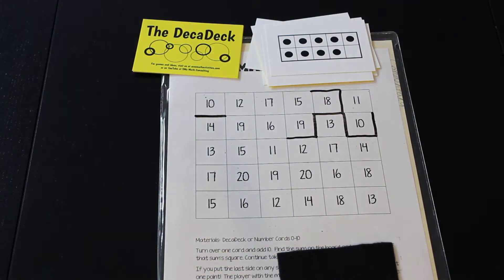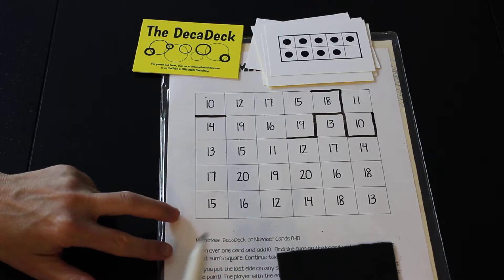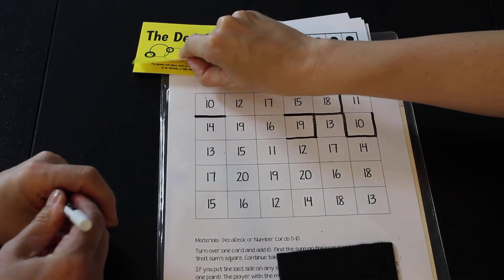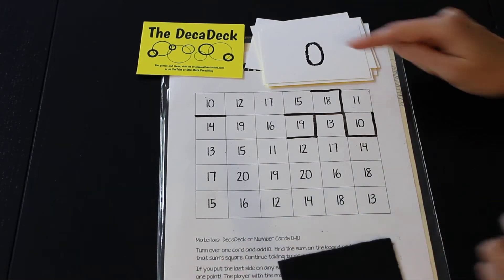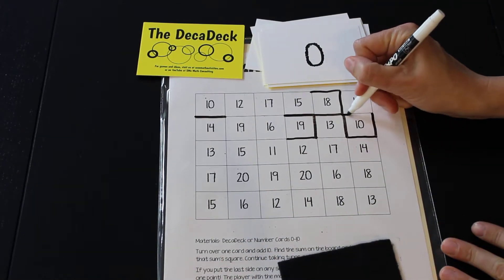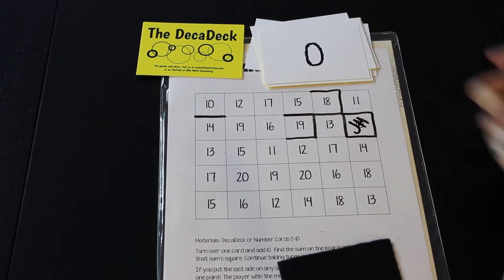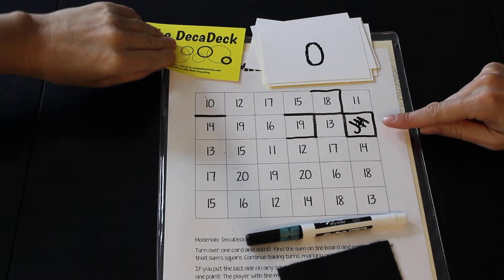I'm just gonna be a wild and crazy mathematician and color in this side right here. Oh, I got zero. Zero plus ten is ten. I'm going to draw a line right here and I'm going to put my initials right here in the box over the number. Does that mean you have one point now? I have one point, that's right.